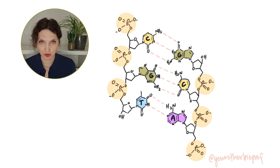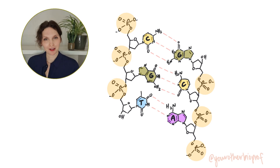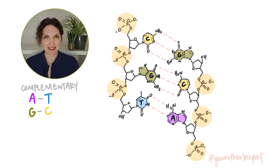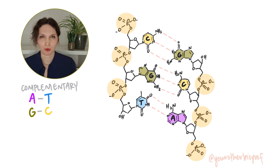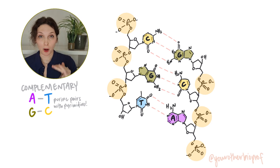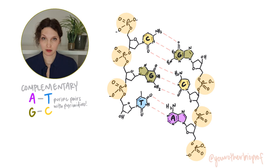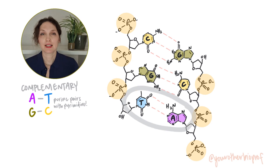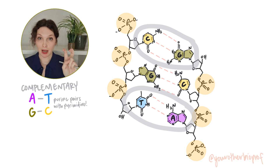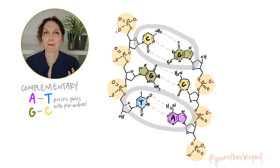DNA is a double-stranded molecule. We haven't yet mentioned that it is also complementary and anti-parallel. Complementary refers to those nitrogenous bases — they're going to pair up in a very predictable way. A always pairs with T, G always pairs with C. So adenine's complementary base is thymine, and guanine's complement is cytosine. These bases on opposite strands are going to pair up and are bound together through hydrogen bonding.